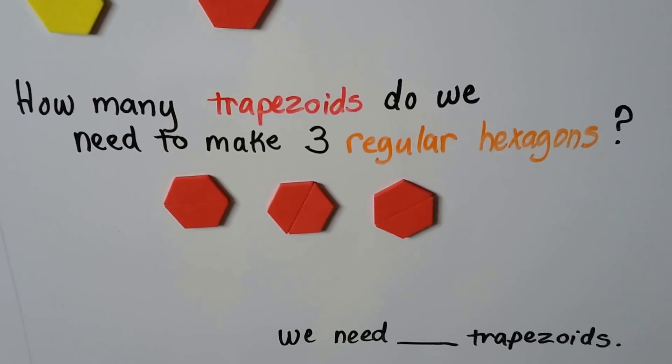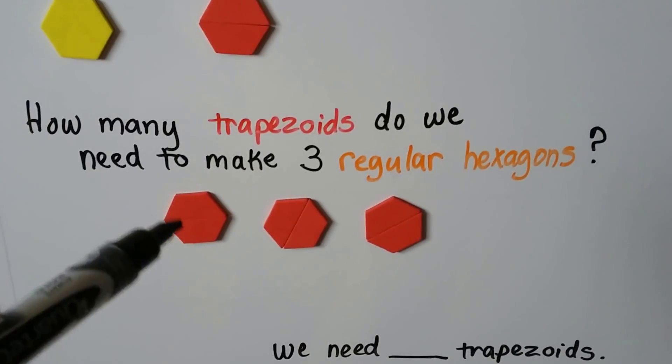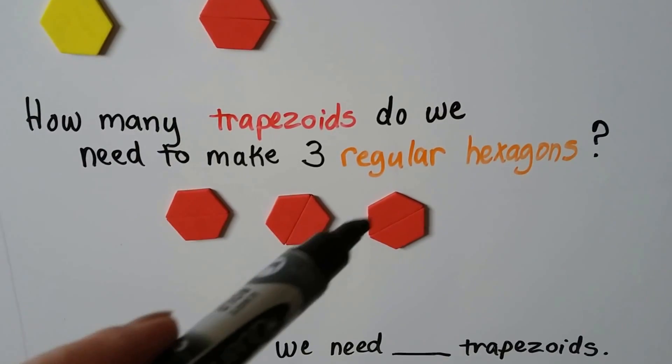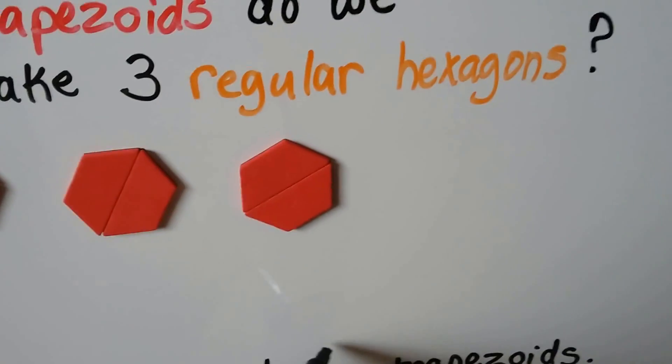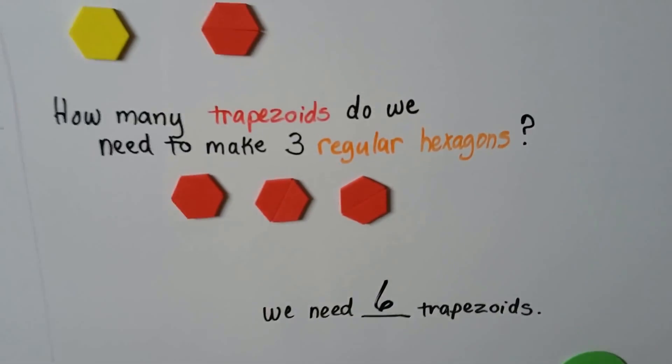So how many trapezoids did we use? We used one, two, three, four, five, six. We needed six trapezoids to make three regular hexagons.